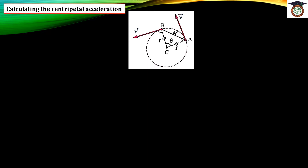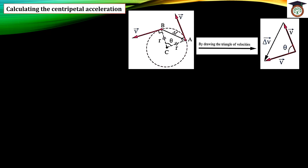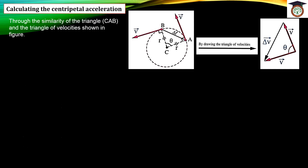There is an angle theta between the two radii of the circle. By drawing the triangle of velocity, which represents the direction of velocity, delta V represents the change in the direction of velocity acting through the center of the circle. Through the similarity between the two triangles — triangle A, B, C with two equal radii and angle theta between them — we can compare them with the velocity triangle.